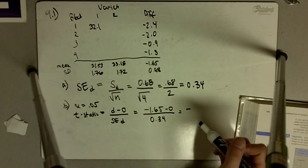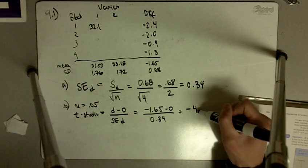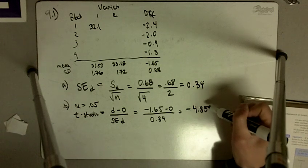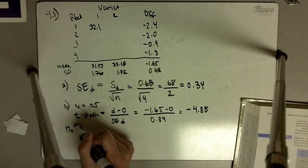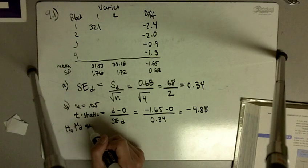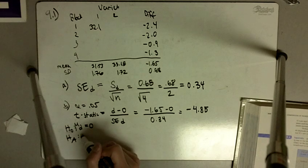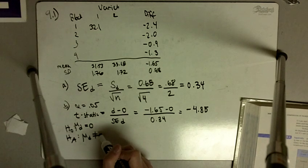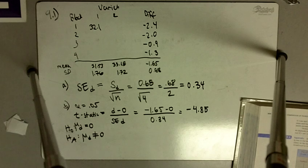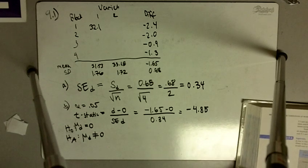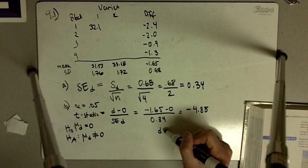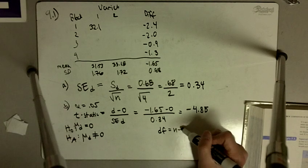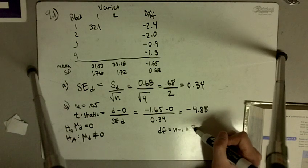So here we get a t-statistic of negative 4.85. I need to list my null hypothesis: the null hypothesis is that the mean difference is equal to 0, and the alternative is that the mean difference is not equal to 0. Our degrees of freedom is N minus 1, or in this case 4 minus 1 equals 3 degrees of freedom.